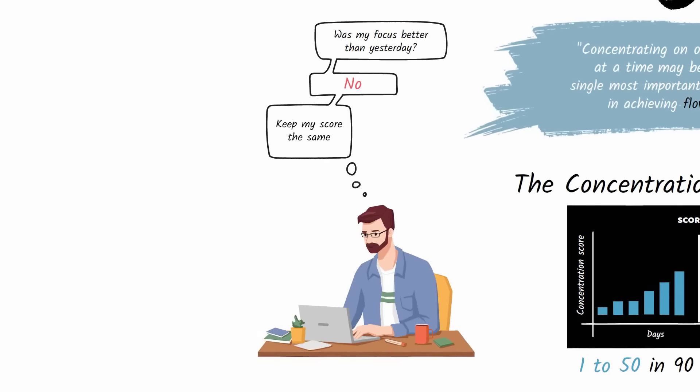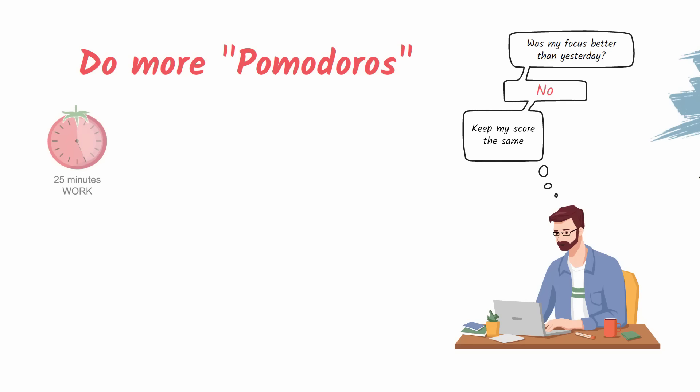I find the best way to improve my score is to spend most of my day doing Pomodoros. That is, setting 25-minute timers to focus intensely and then resting for five minutes. Each Pomodoro feels like a set at the gym that strengthens my concentration.